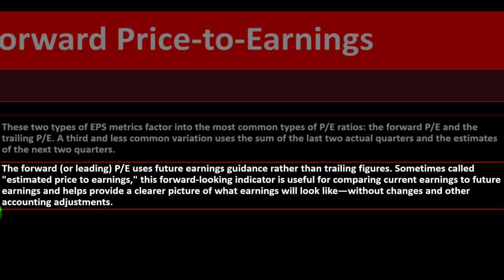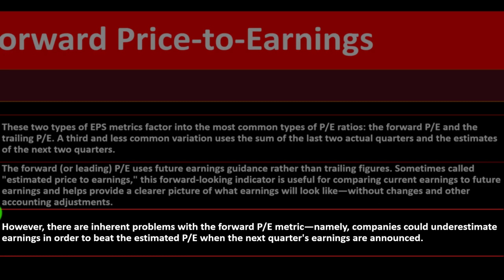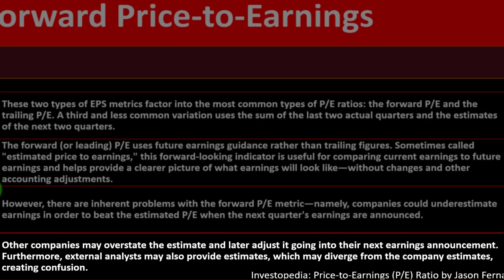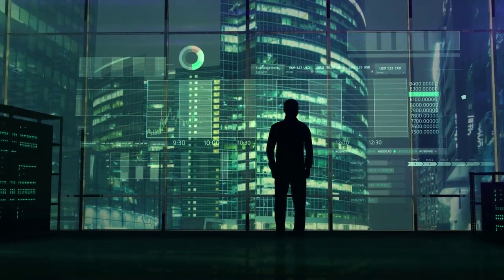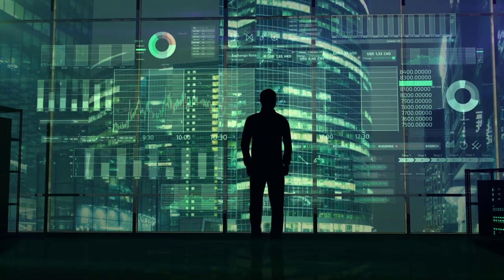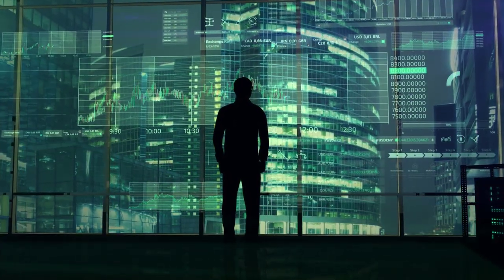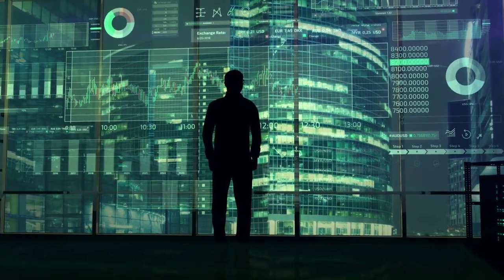The forward, or leading, P/E uses future earnings guidance rather than trailing figures — sometimes called estimated price to earnings. This forward-looking indicator is useful for comparing current earnings to future earnings and helps provide a clearer picture of what earnings will look like without accounting adjustments. However, there are inherent problems with the forward P/E: companies could underestimate earnings in order to beat the estimated P/E when the next quarter's earnings are announced, while other companies may overstate the estimate and later adjust it going into their next earnings announcement.